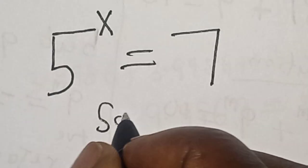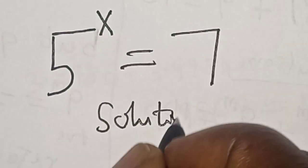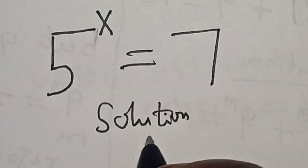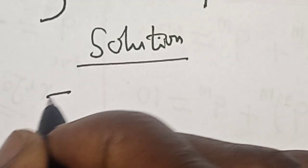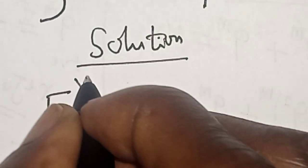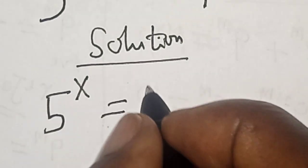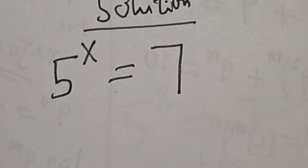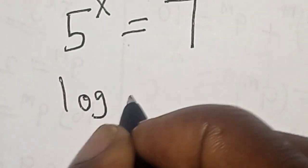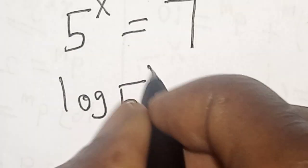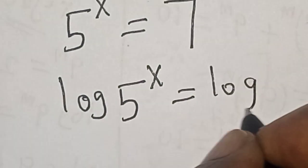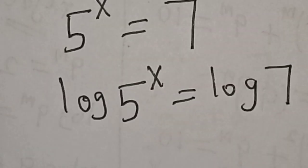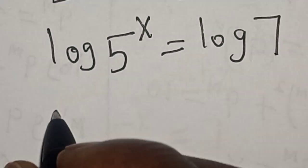Solution: We have the given equation 5 raised to power s equals 7. Now let's take the log of both sides. We have log of 5 raised to power s equals log 7.